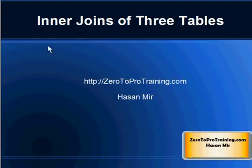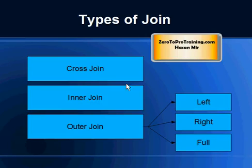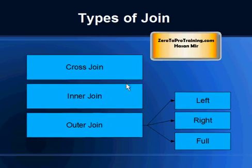Hello, in this session I will talk about inner joins of three tables. This is Hassan Mir from Zero2ProTraining.com. In the previous sessions we have talked about different types of joins: cross joins, inner joins, and outer joins, including left outer join, right outer join, and full outer join. Now it's time to look at how you apply the join rule to more than two tables.